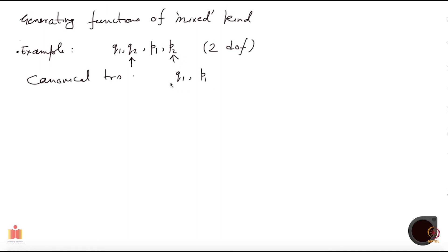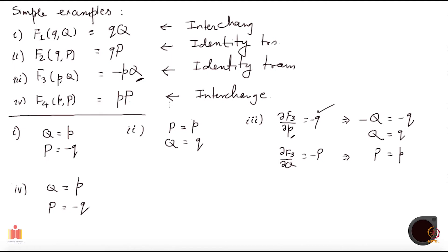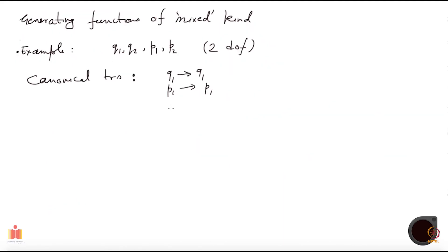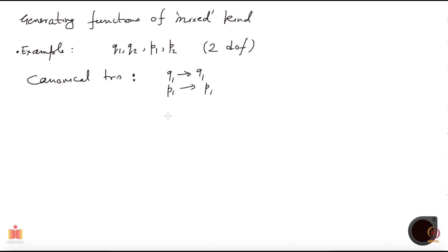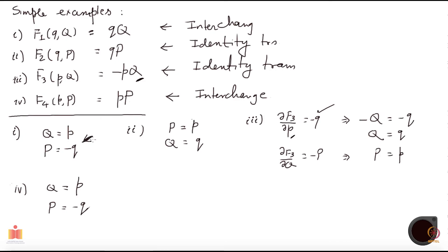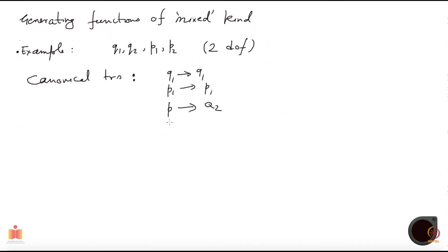So, I am looking at a canonical transformation which takes q1 to Q1, p1 to P1, and for the second pair: p2 becomes capital Q2, and minus q2 becomes capital P2 — so the coordinate becomes minus the new momentum and the momentum becomes the new coordinate.